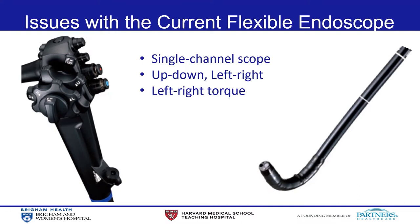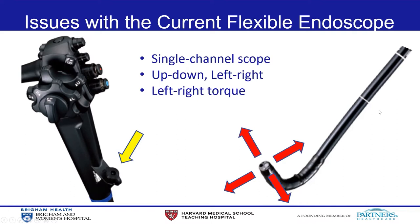If you look at the design of the current flexible endoscopes, we only have a single-channel therapeutic endoscope, which allows use of only one instrument that is non-articulating. In terms of maneuver, we only have up and down, left to right, and left and right torque. We are performing flexible endoscopic surgeries — including tissue incision, dissection, mobilization, and hemostasis — with only this single-channel endoscope, forcing ourselves to perform complex procedures like ESD and EFTR safely and securely.